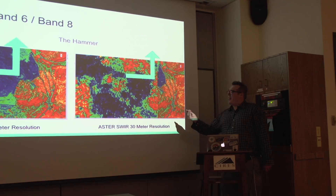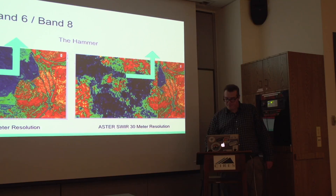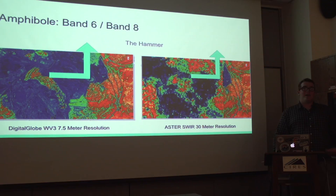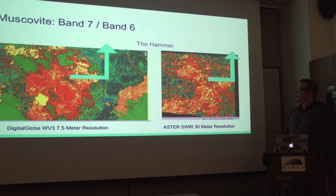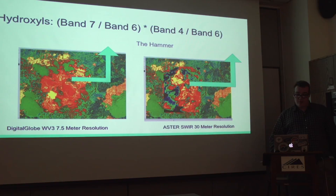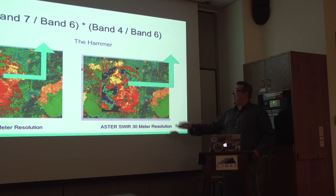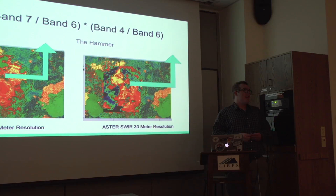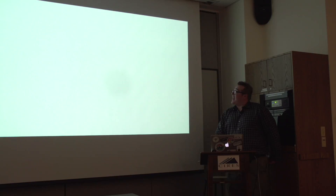This is an area of processing that shows how much more detailed the Digital Globe imagery is. The area I call 'the hammer' is much crisper and more detailed. I found the clay amphibole at band 6 over band 8, and amphibole has something of a negative correlation with gold discovery, while muscovite has a closer correlation. The hydroxyl impurities are again showing how much crisper the hammer is in Digital Globe, and areas of really bright yellow intensity represent the greatest concentration — yellow means gold.